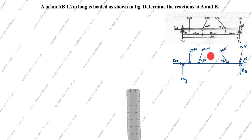Now we will resolve the three inclined forces into vertical and horizontal components. For the 20 Newton force at 60 degrees: horizontal component is 20 cos 60°, vertical component is 20 sin 60°. For the 30 Newton force at 45 degrees: horizontal component is 30 cos 45°, vertical component is 30 sin 45°.